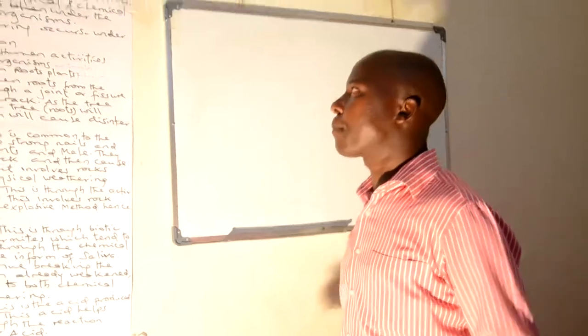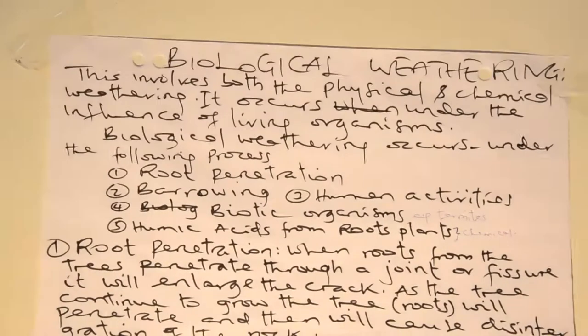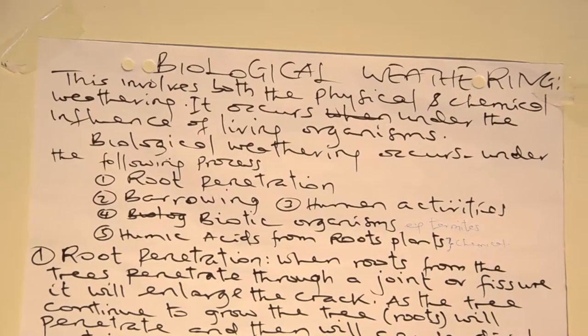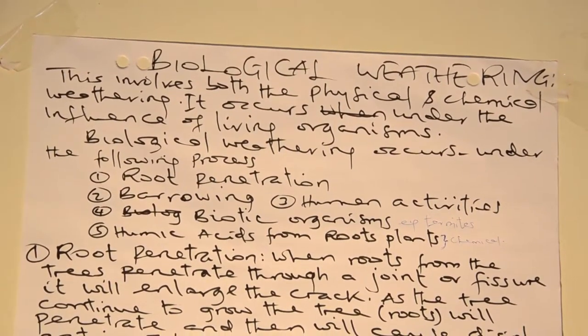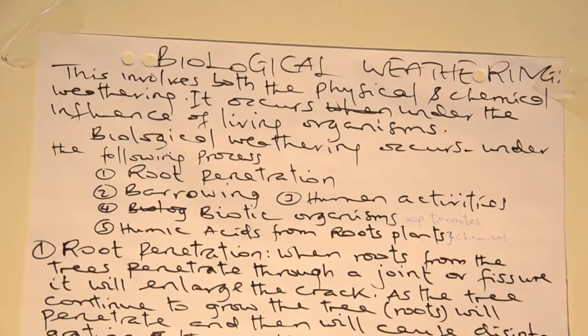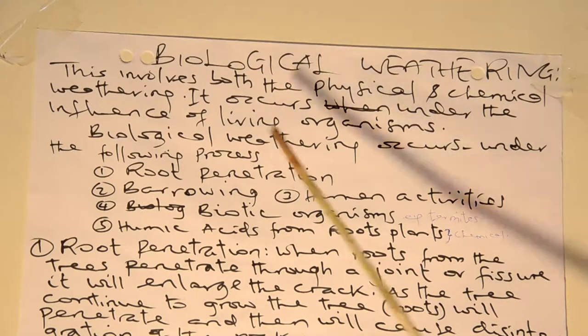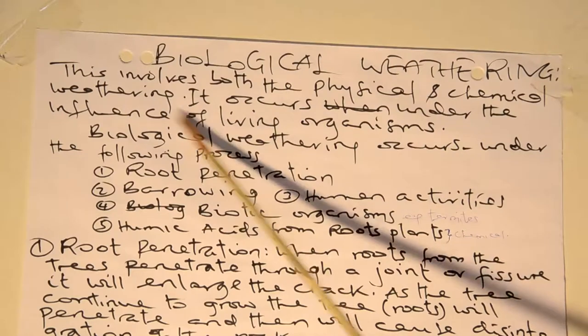Another type of weathering is biological weathering. We previously described physical or mechanical weathering, then chemical weathering, and now we have to describe biological weathering. Whenever we are talking about biological weathering, these are living things or organisms which can lead to the formation of weathering. Biological weathering involves both physical and chemical weathering.